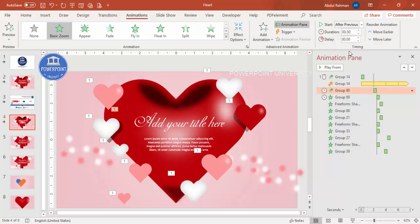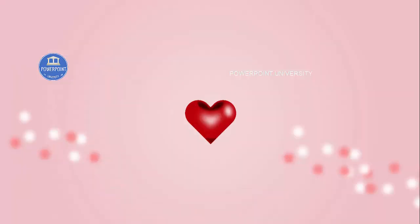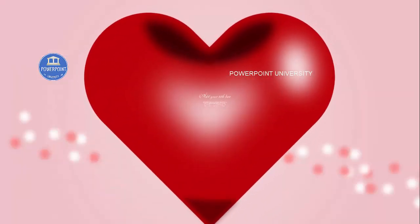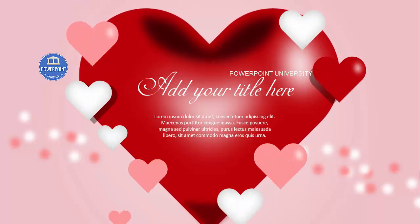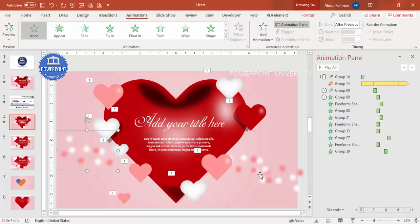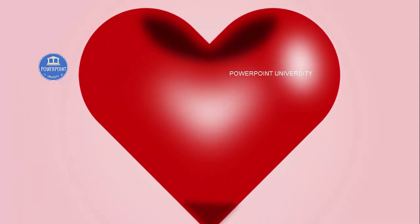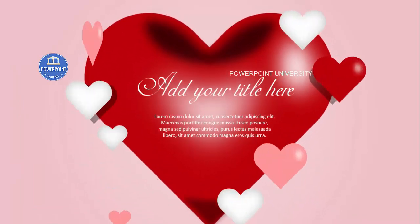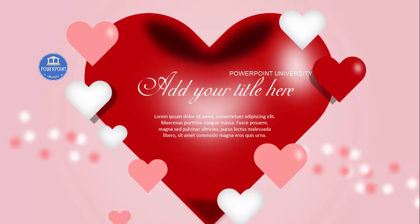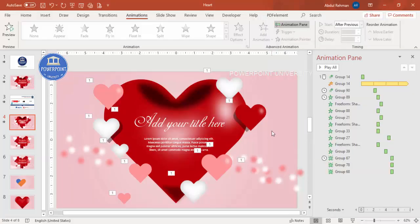Play the slide to preview — everything comes in nicely. For the bouquet effect, group it and add a Fade effect set to After Previous. Play the full slide and you can see the heart zooms in, beats, the small hearts stretch in with delays, and the bouquet fades in. This way you can make your own slides and impress your audience with your creativity.